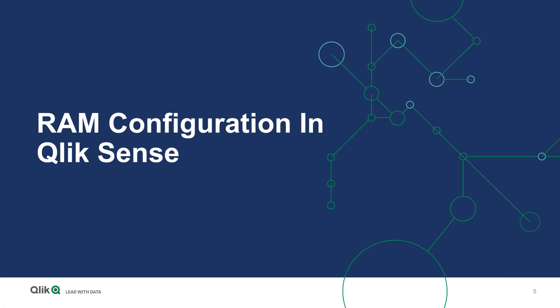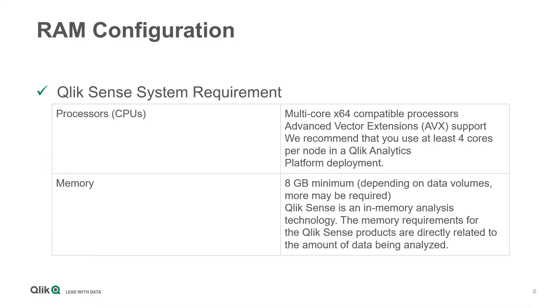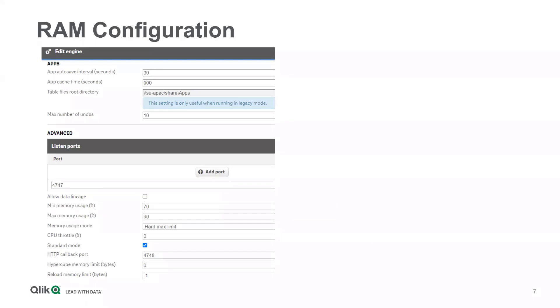Before we do any troubleshooting, we need to understand the RAM configuration settings in Qlik Sense. The first thing is system requirements — the basic requirements for CPU cores and memory usage. All Qlik Sense server hardware needs to meet these requirements. Keep in mind that as workload increases, the hardware capacity will also need to be reviewed over time. The RAM settings in Qlik Sense can be found in the Engine section of the QMC.